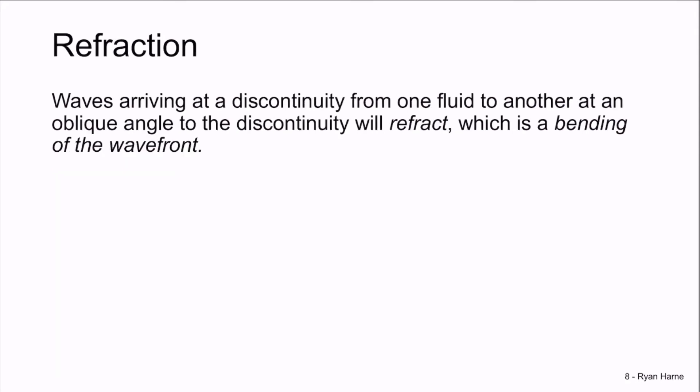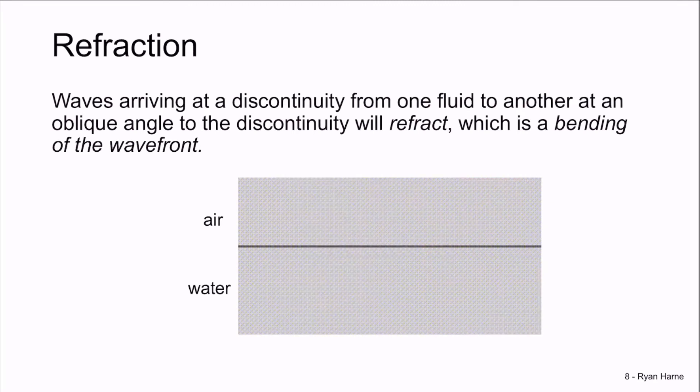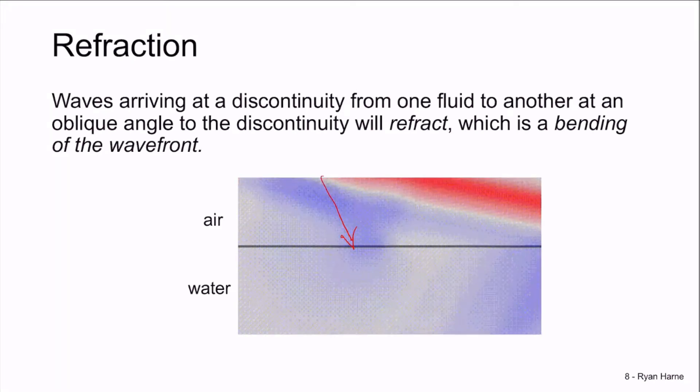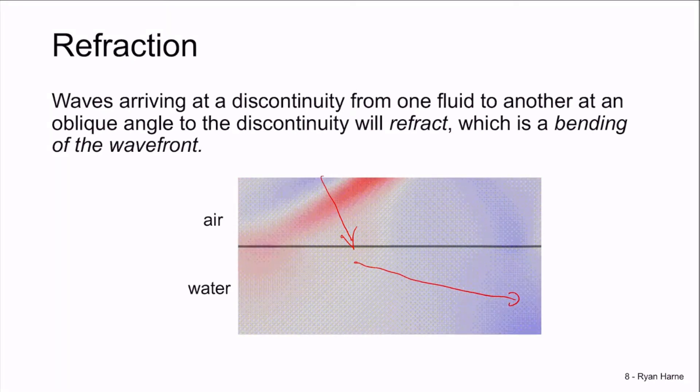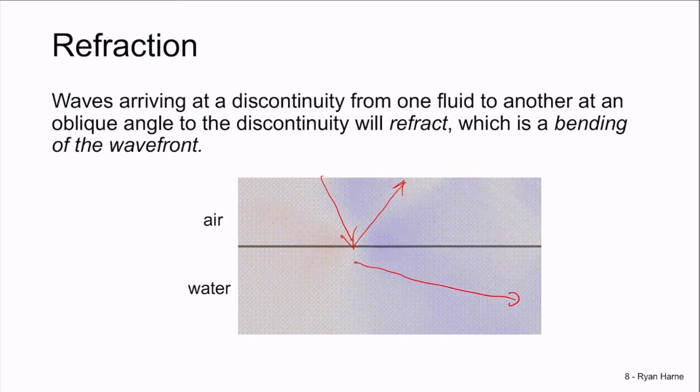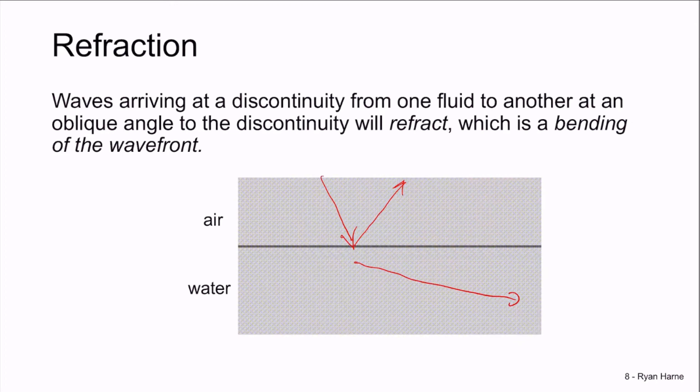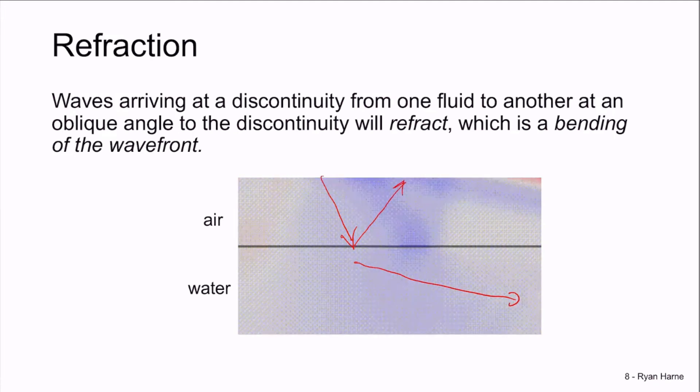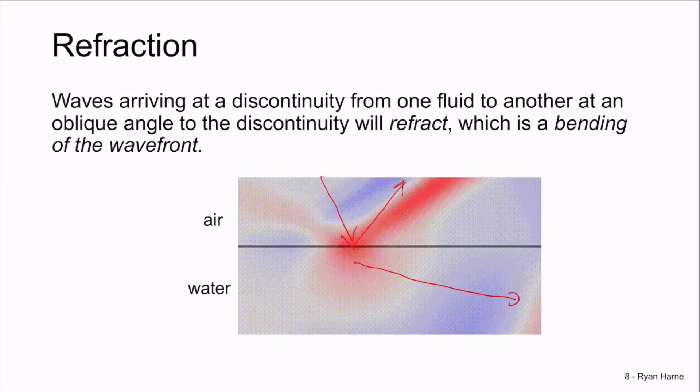Waves refract. Waves that arrive at a discontinuity from one fluid to another will bend. And this bending is determined by the obliqueness of the angle and the difference between the fluids. So in this video here, we have a wave arriving from air that reflects off an air-water boundary but bends as it comes off. The reflected wave departs at an angle equal to the incident angle, whereas the bent angle on water is a much steeper angle. And we see this video again. This is refraction. It's bending of the waves when waves arrive at a fluid interface.